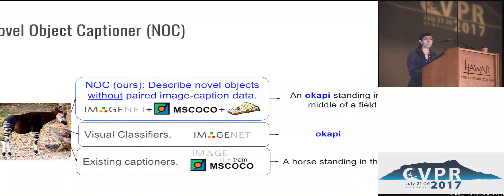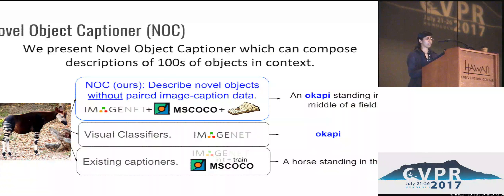In this work, we present the Novel Object Captioner, which can compose descriptions of hundreds of categories of objects in context, without paired image caption training data. I'll first present some of the insights of our model.